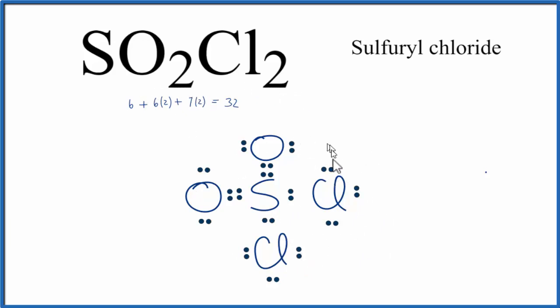You'll also note that everything on the outside, the oxygens and the chlorines, they have eight valence electrons. But the sulfur, it has two, four, six, eight, ten, twelve. That's okay though. Sulfur, that's an exception to the octet rule, it can have more than eight valence electrons. So this is the best Lewis structure for SO2Cl2.